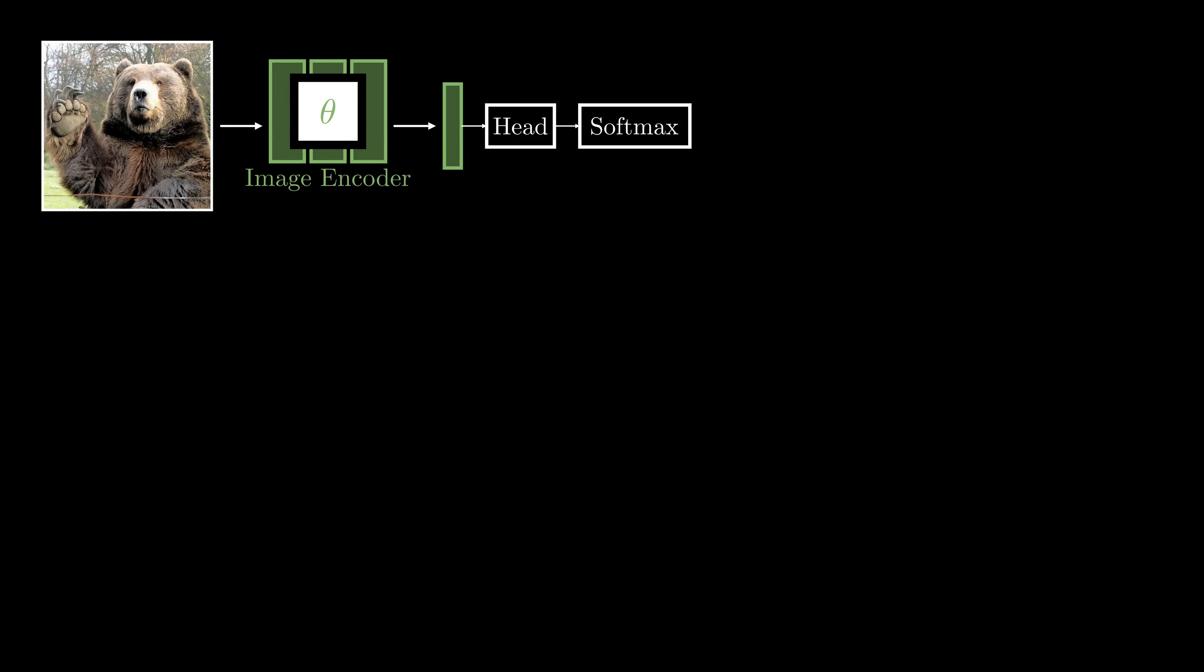One way is to learn features by training a neural network to solve tasks like classification. On top of the extracted features, we place an output projection head, typically a linear layer or a multilayer perceptron, that predicts class scores. We then use a softmax layer to turn the scores into probabilities for each class.